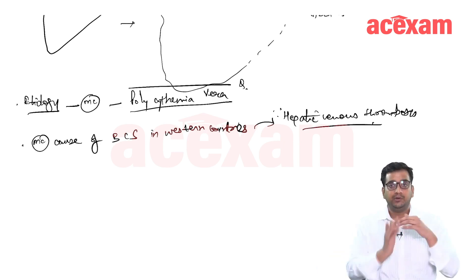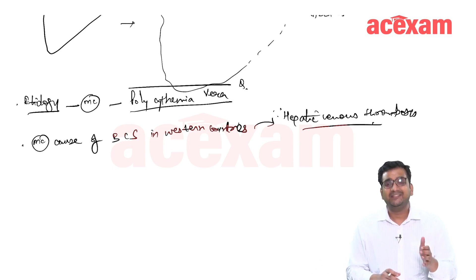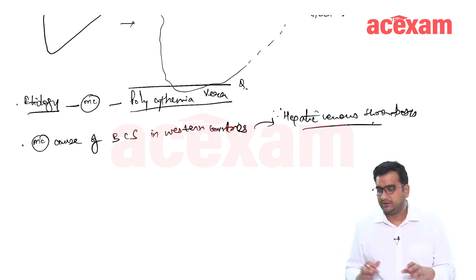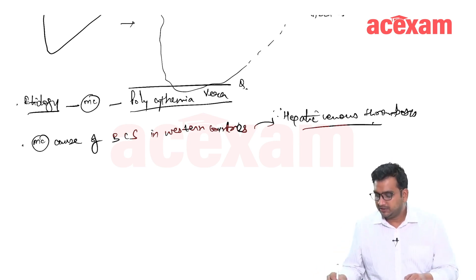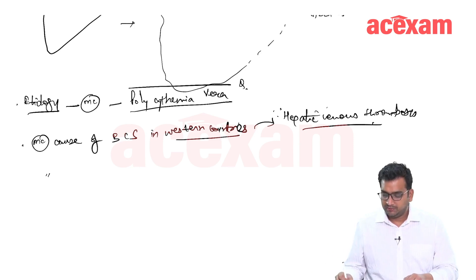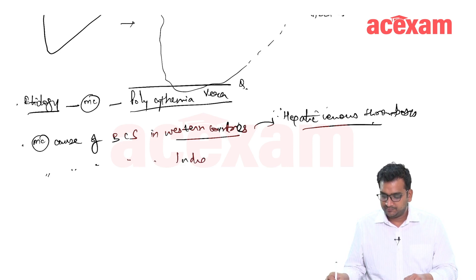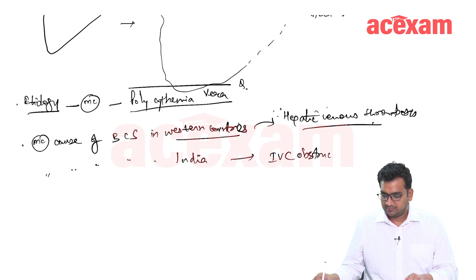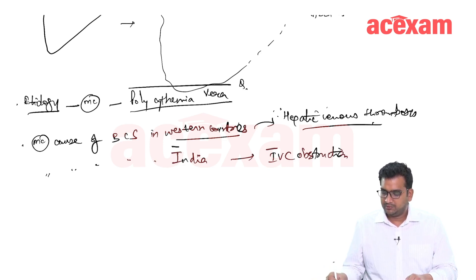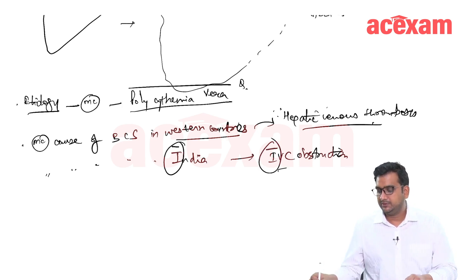Overall, Budd-Chiari syndrome can occur due to both hepatic venous thrombosis or IVC obstruction. In western countries, it is mainly seen because of hepatic venous thrombosis. The most common cause of Budd-Chiari syndrome in India is IVC obstruction — both 'I' for India and IVC obstruction.